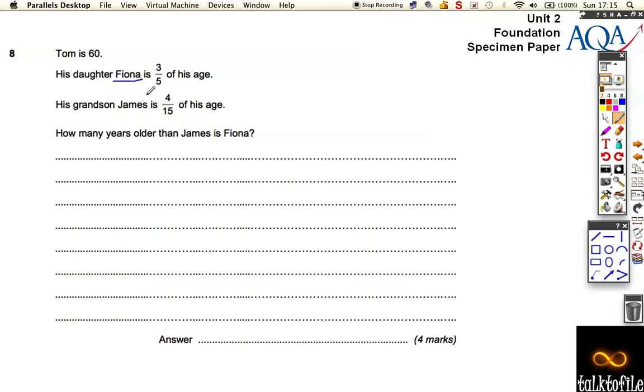we need to work out the age of Fiona and the age of James, and then we'll work out how much they are older or younger than each other. So if we consider Fiona first,